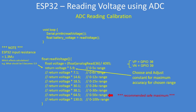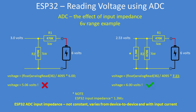For example, a 6 volt battery divided by 2 should give an answer of 3, so the constant in the software should be 6. But in reality, because the input impedance of the ESP32 is approximately 1.3 megohms, it loads the voltage divider and you need to compensate in software. That constant of 6 needs to become 7.11 to get the correct voltage reading. Note that input impedance varies from device to device and depending on input current.